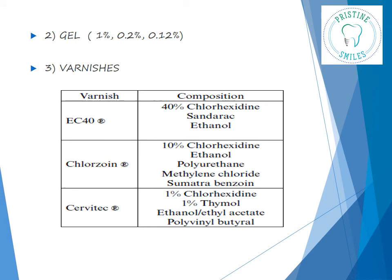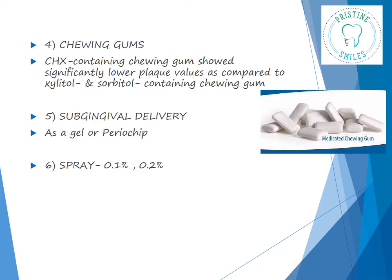It is also available as a gel form, though gel distribution to the tooth surface is very poor; it is dispensed by a toothbrush or a tray. Chlorhexidine varnishes are also available, usually used as prophylaxis against root caries. It is also available as a chewing gum — chlorhexidine-containing chewing gum showed significantly lower plaque values compared to xylitol and sorbitol-containing chewing gum. Additionally, it is available as a gel or PerioChip for subgingival delivery as a local drug delivery agent, and also as a spray at 0.1% and 0.2%.